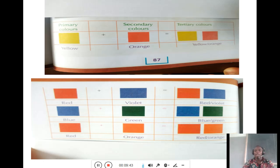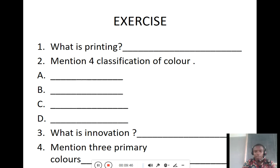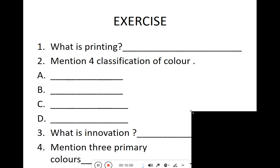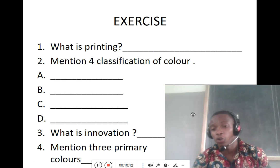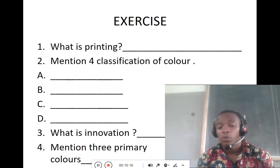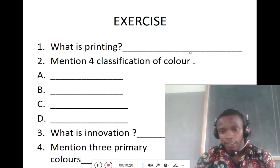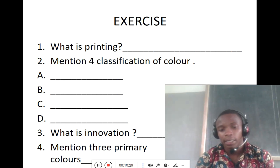Now is the time for exercise. There are four questions: What is printing? Mention four classifications of color. What is innovation? Mention three primary colors. Make sure you submit your exercise here at school on Friday. Thank you for your cooperation and for listening. See you in another lesson.